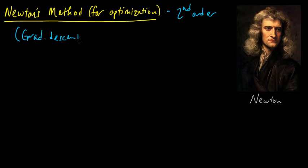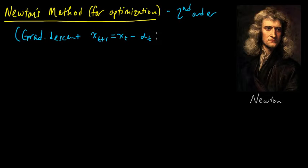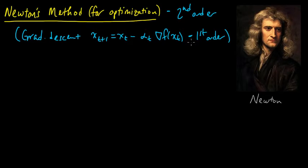This is opposed to gradient descent, which is the classic first-order method, in which your new point x_{t+1} is x_t minus some step size times the gradient of your function evaluated at x_t. So gradient descent is a first-order method. There are other first-order methods also, but here the only thing being used is the gradient. When we apply Newton's method to optimization, we'll be using the second derivatives as well — so it's a second-order method.